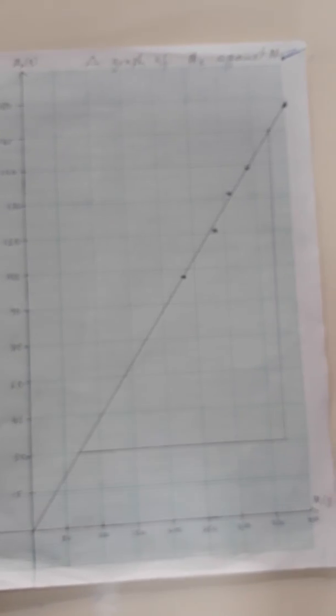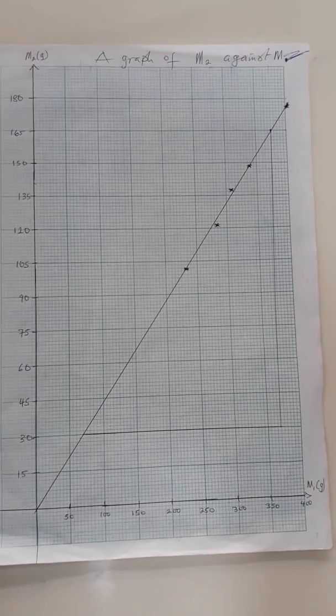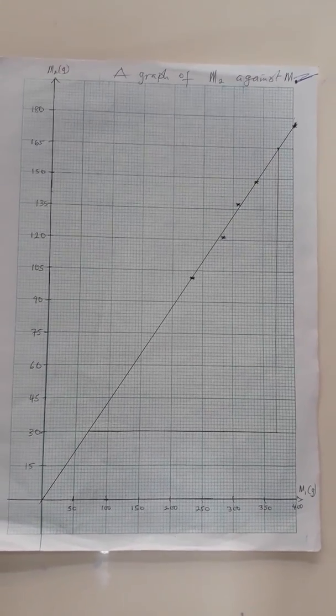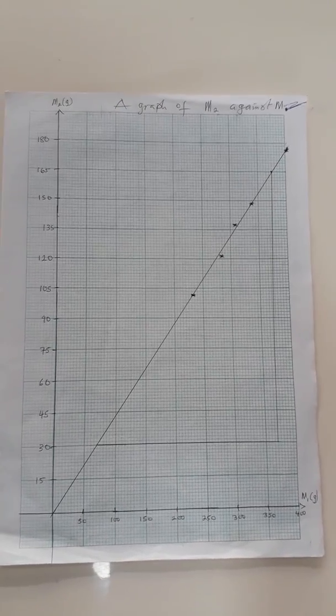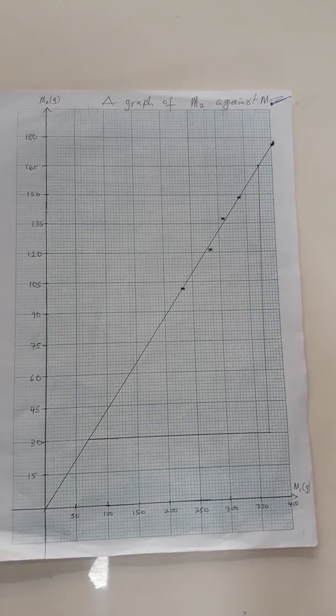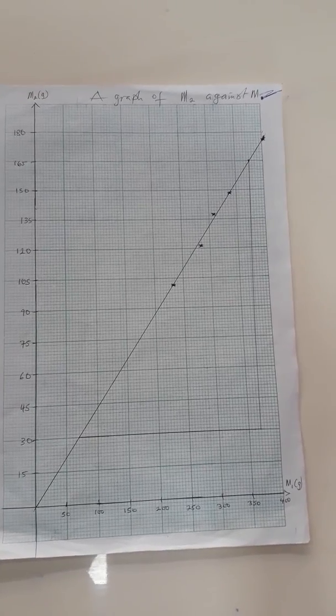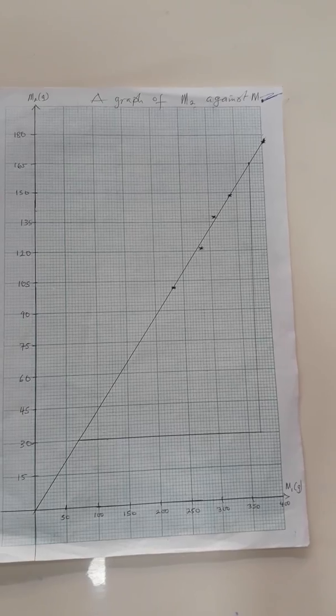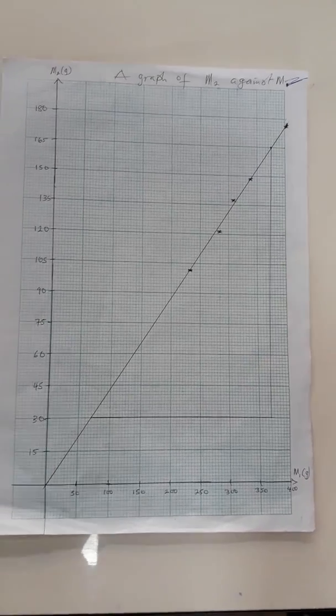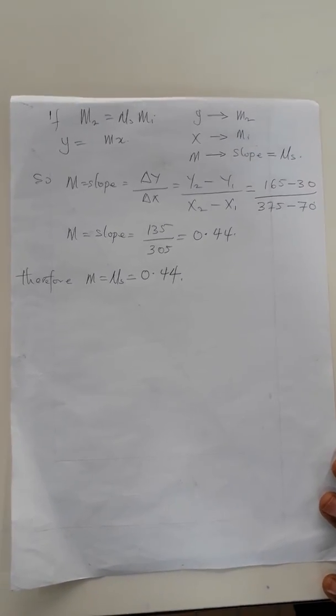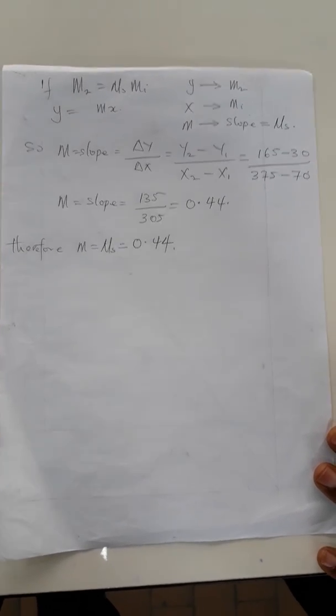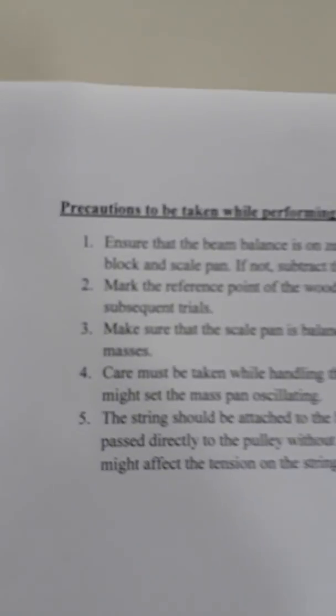I have plotted my graph and I have my M2 on the y axis and my M1 on the x axis. And my plot shows a straight line passing through the origin. The gradient of this slope is the coefficient of static friction that we are looking for. So for my own value, I have gotten mu s, which is the coefficient of static friction at 0.44. Comply in order to get the correct values, and these are the precautions.